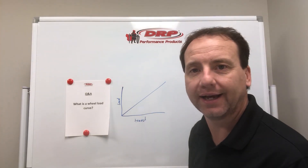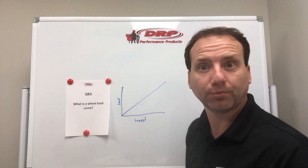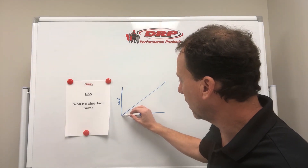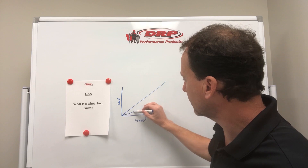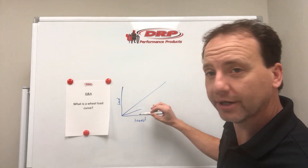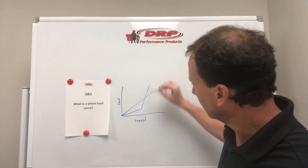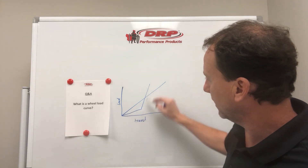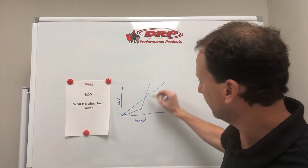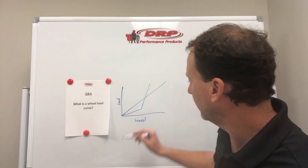Now, let's say you've got a bump spring on there. So what we're going to do, we're going to run a lighter weight primary spring, and then we're going to get into our bump spring, and that will be a different Willow Curve. You see, it's still linear because it's got two springs.